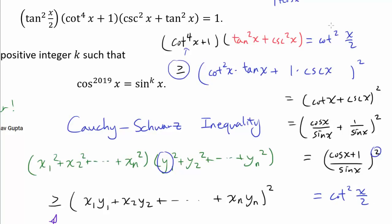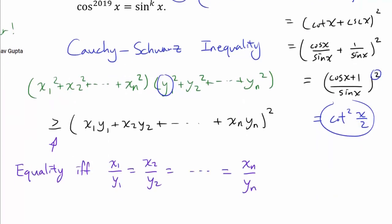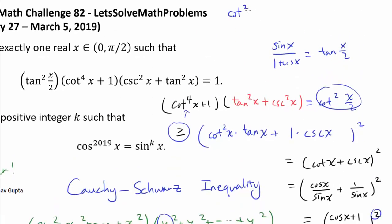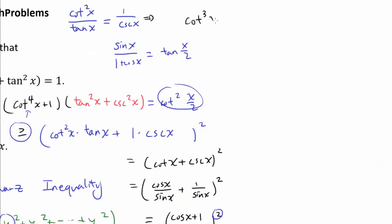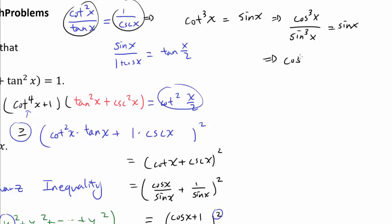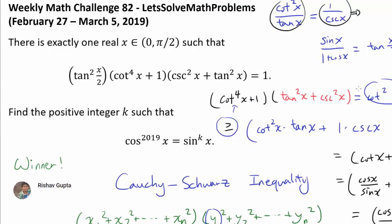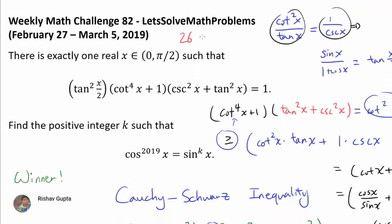The equality case tells us x₁/y₁ = x₂/y₂, so cot²(x)/tan(x) = 1/csc(x). This gives us cot³(x) = sin(x), or cos³(x)/sin³(x) = sin(x), so cos³(x) = sin⁴(x). We arrive at the same result with slightly less work. Raising both sides to the 673rd power gives cosine²⁹(x) = sine²⁶⁹²(x), and our final answer is k = 2692.